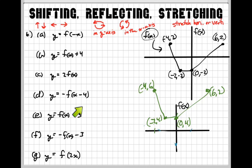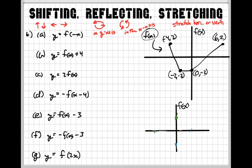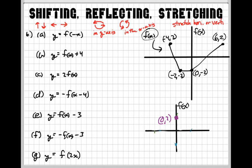So for graphing this one: for our first point, moving right 4 spaces because it says minus 4, we add 4 to the x value. So (negative 4, 2) becomes (0, 2). For the next point, adding 4 gives us (positive 2, negative 2). Then adding 4 to the next gives (4, negative 2). And adding 4 to the last one gives (10, 2). And there you have it.